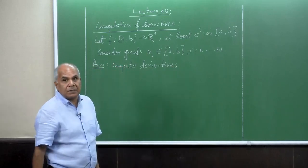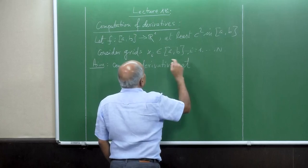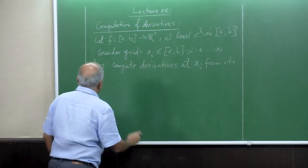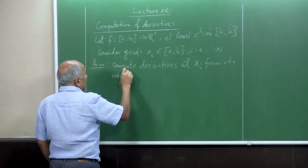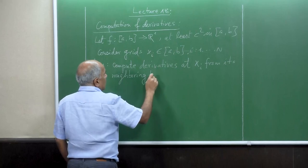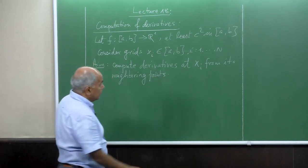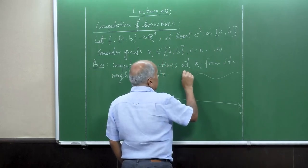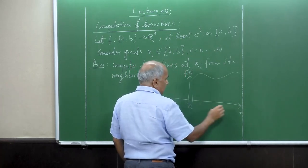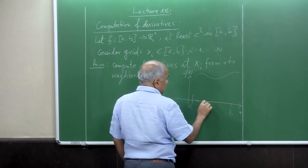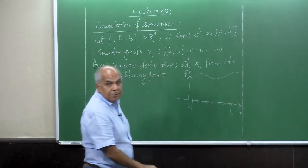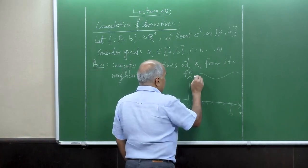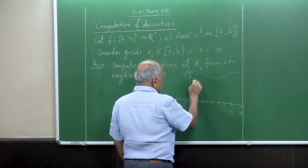And our aim is to compute derivatives, first order as well as second order derivative, at the grid point itself. Suppose I have a function from A to B. I have grid points here, regular as well as irregular. I have shown in the interpolation we can generate very irregular points. And then I have my discrete values here.